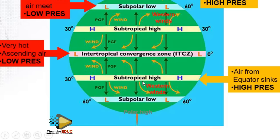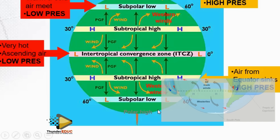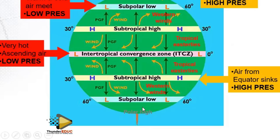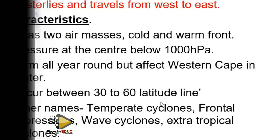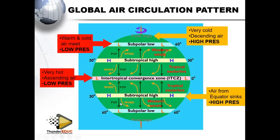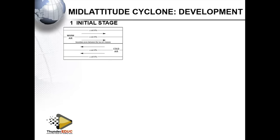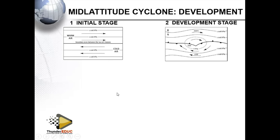Looking at the southern hemisphere, the air coming from the polar region is cold, and the air from the subtropical region is warm. The polar easterlies move from east to west, and the westerlies move from west to east — they bypass each other at the subpolar low pressure. This initial stage is sometimes called the stationary stage because the boundary has not moved at all.